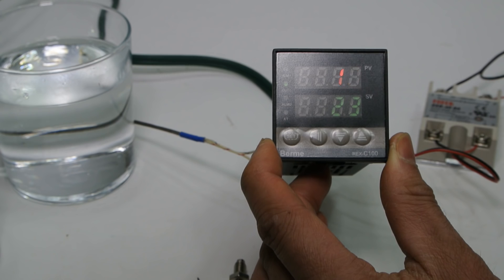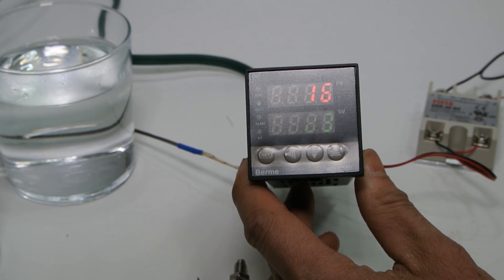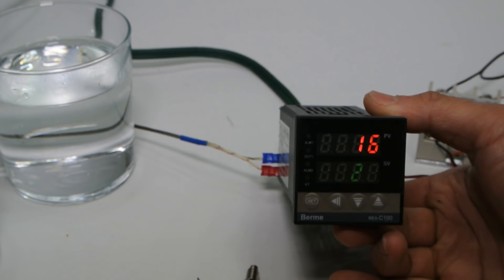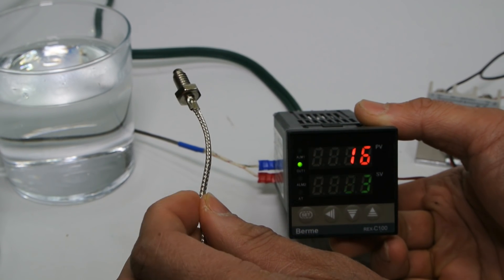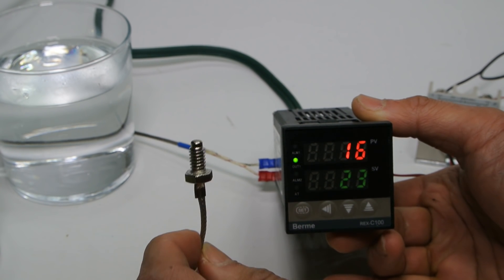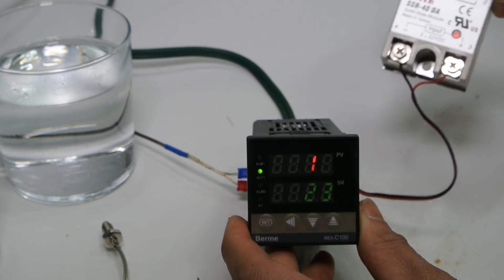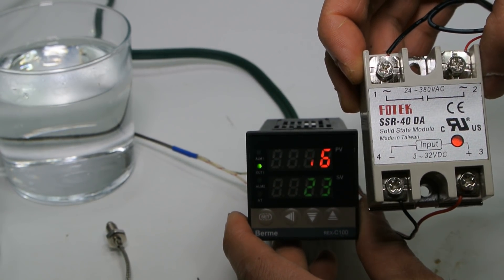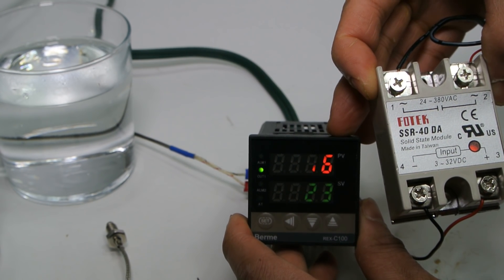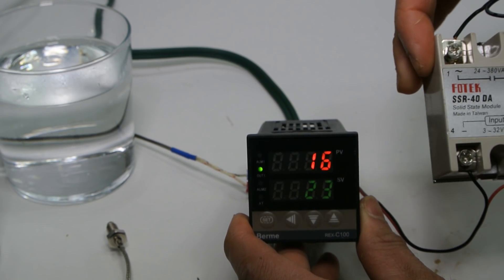So what I have here is a Burme Rec C100 PID controller and this I got off eBay as a package. It came with the PID controller, a thermal coupler that has a steel braided cable and it's threaded at one end so you can tap something and screw that in. And it also came with a solid state relay, this guy here. This one is rated up to 24 to 380 volts AC. I'm not sure of the amperage.